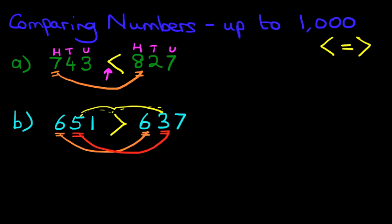651 is greater than 637. And we didn't even look at the units because we didn't have to. We looked at the hundreds. They were the same. We discount that. We then move on to the tens. And the 5 is greater than 3. And we can answer the question. So that wasn't very difficult, was it?